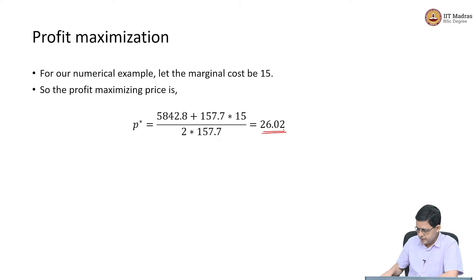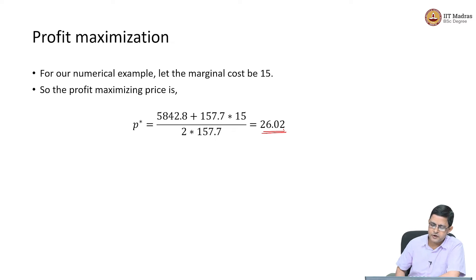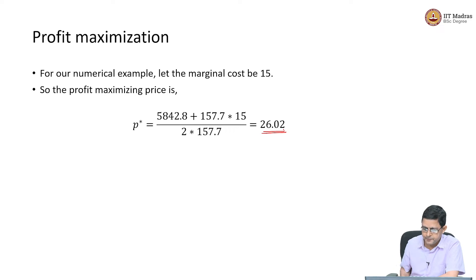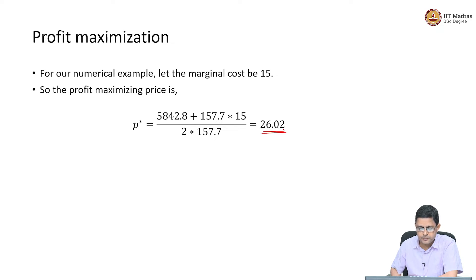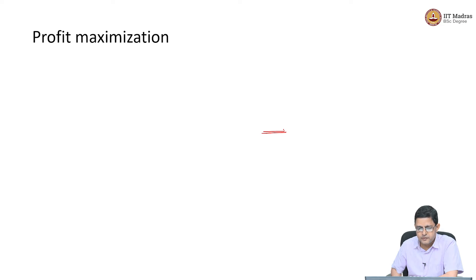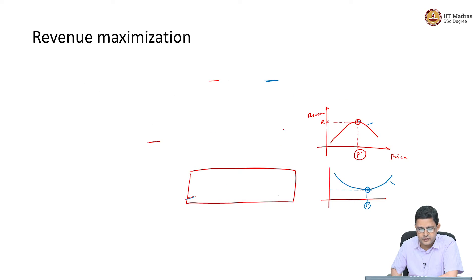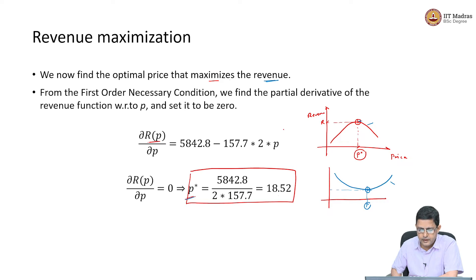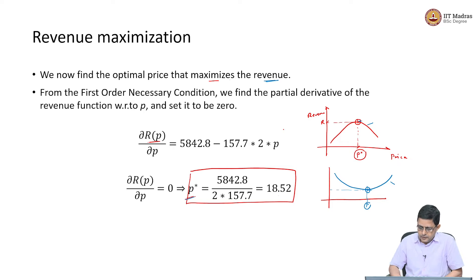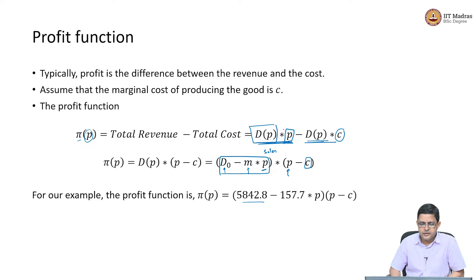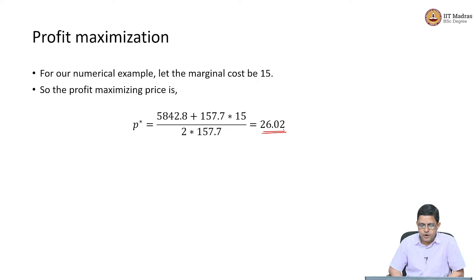Let us understand this. This price maximizes profit. If an organization wants to have the maximum possible profit, they should be charging 26 rupees as the price of the product. Whereas, if the objective of the organization is to maximize revenue, then they should be charging only 18.5 rupees. So, 18.5 rupees to maximize revenue, whereas 26 rupees to maximize profit.